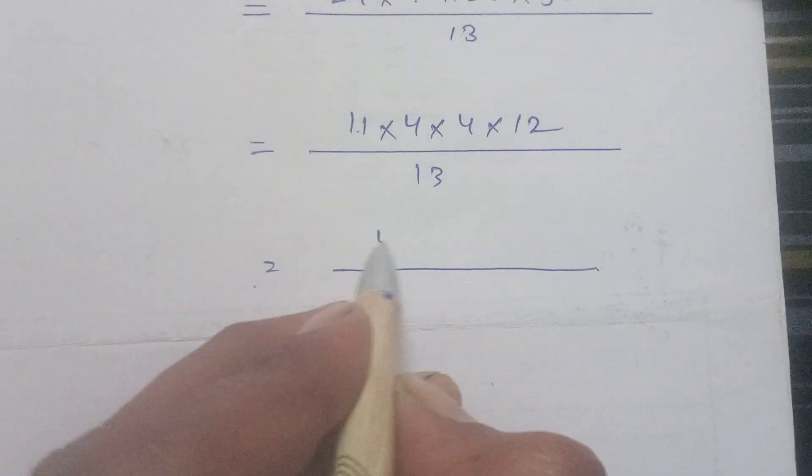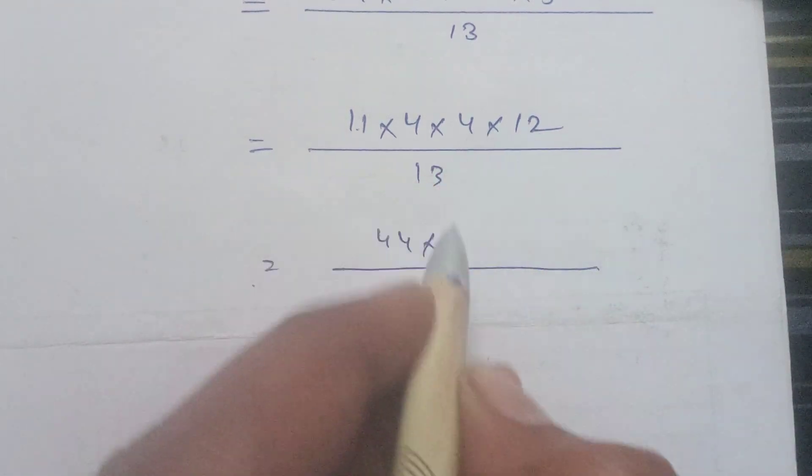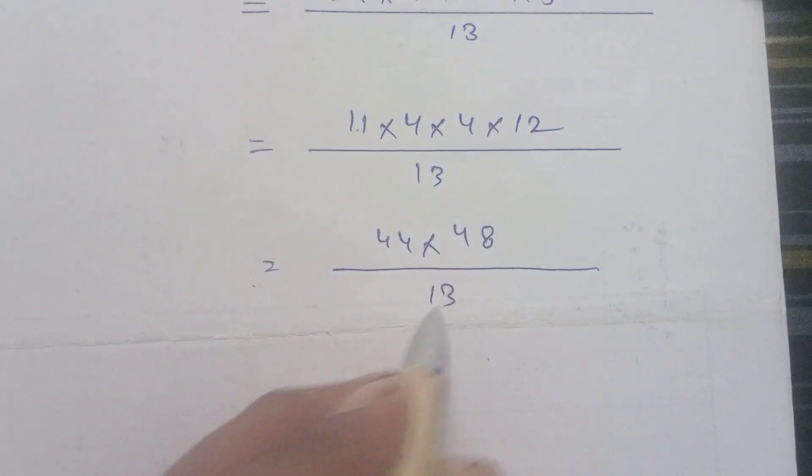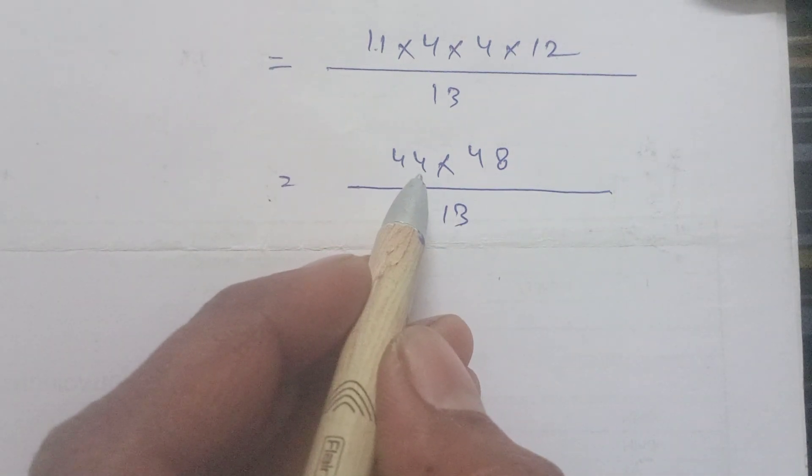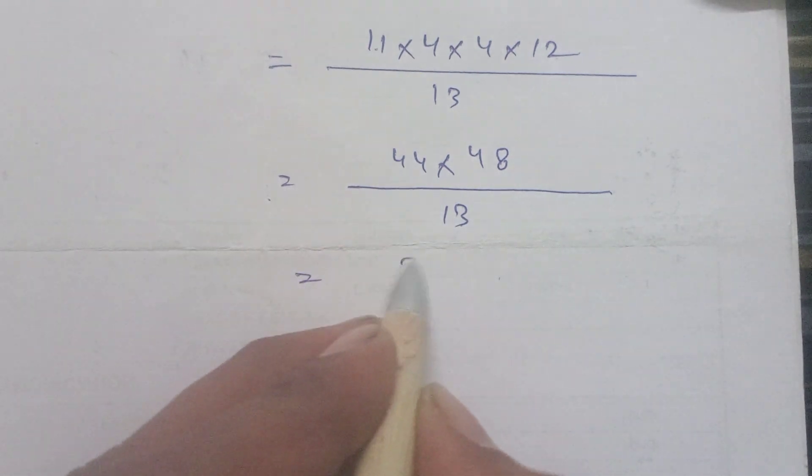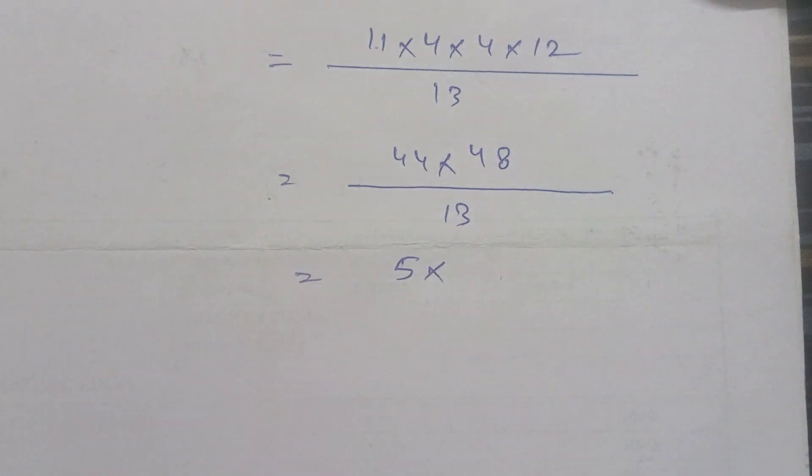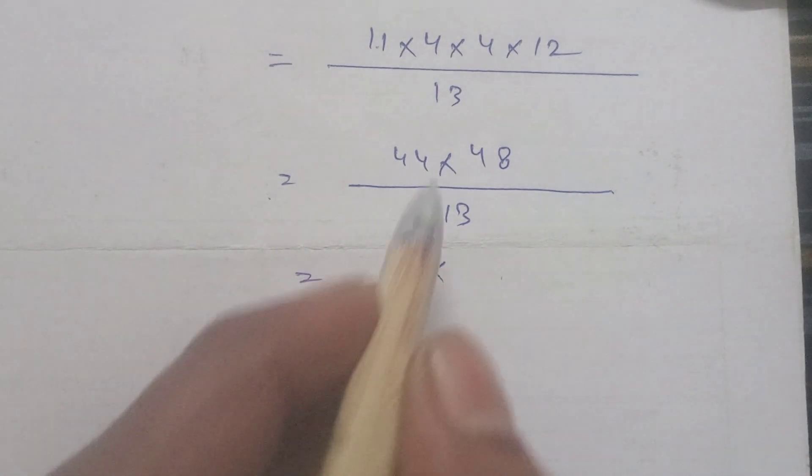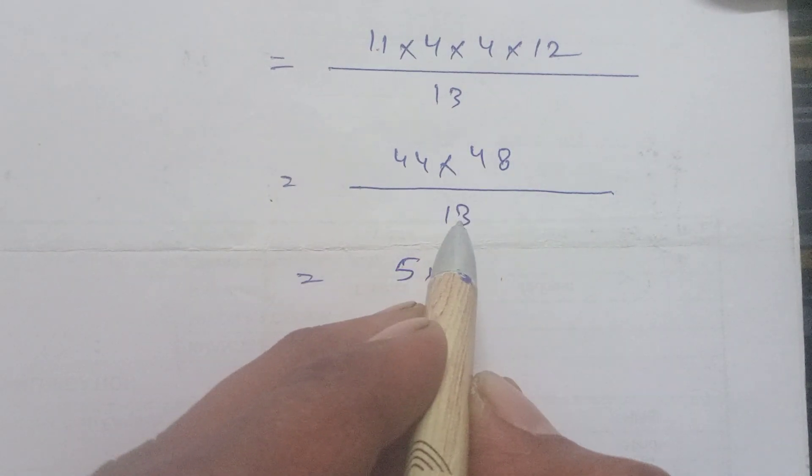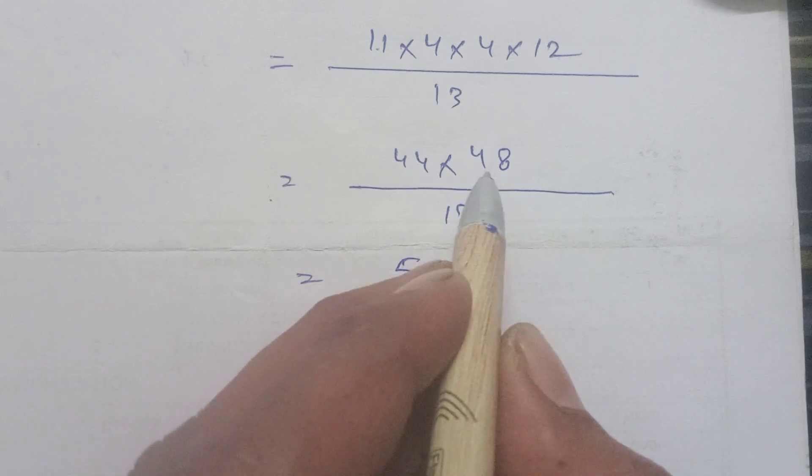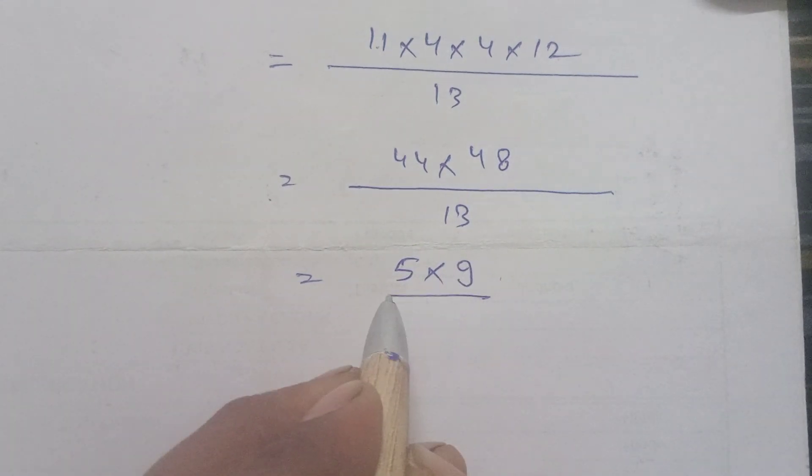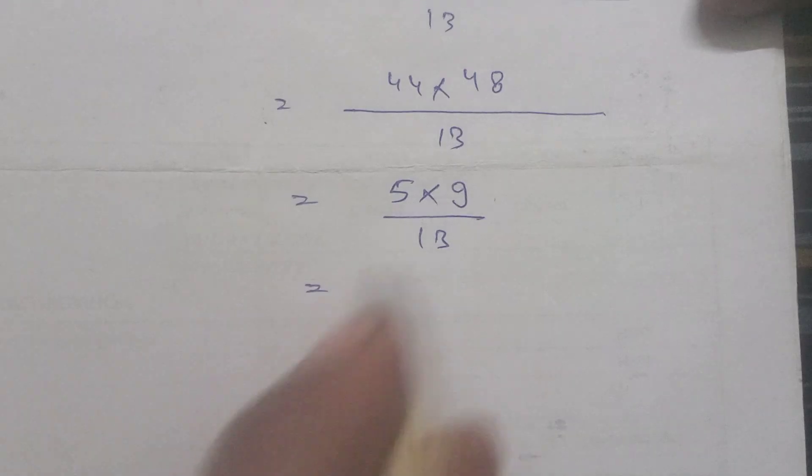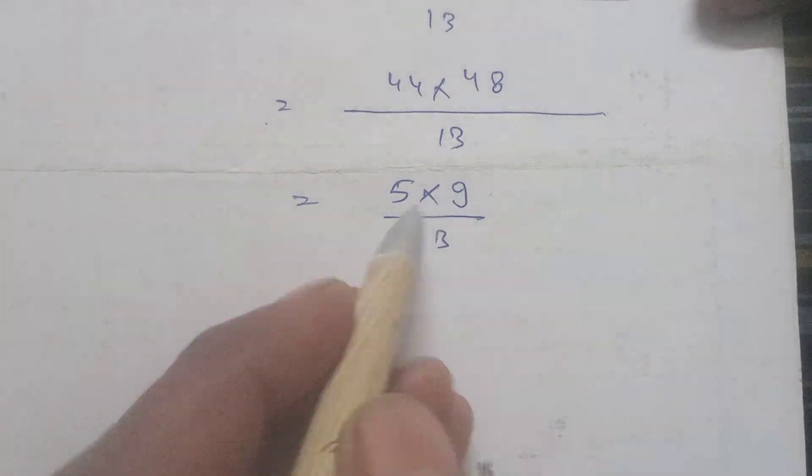So we have 11 times 4 times 7 times 6 times 12 divided by 13. We can simplify this: 11 times 4 is 44, 7 times 6 is 42. 13 times 3 is 39, then the remainder will be 9, and 9 times 5 is 45.